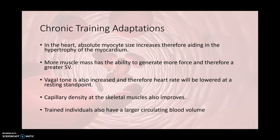Let's talk about chronic training adaptations in our cardiovascular system. In the heart, absolute myocyte size increases, aiding in hypertrophy of the myocardium. More muscle mass has the ability to generate more force and therefore a greater stroke volume. Vagal tone is also increased and therefore heart rate will be lowered at rest — that's why more trained individuals have a lower resting heart rate. This is beneficial because the most costly activity the heart can engage in is generating force, so having the heart do this fewer times per minute is a benefit. A lowered heart rate also allows for more time in diastole and cardiac filling time, which along with the increased muscle mass will increase stroke volume with each cycle.